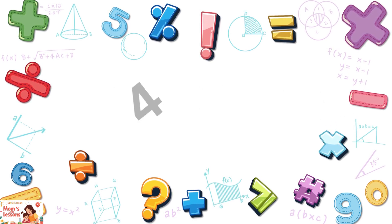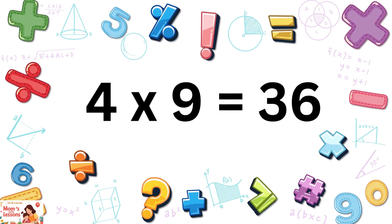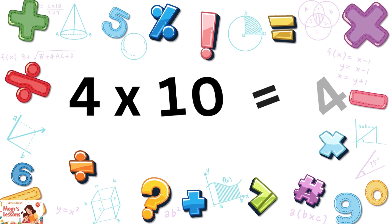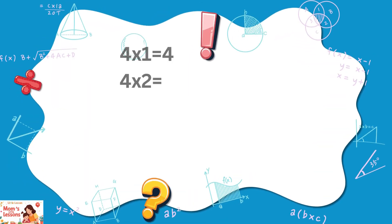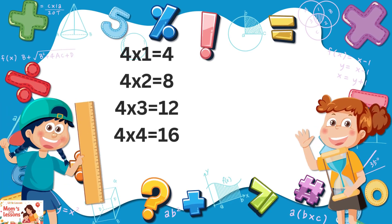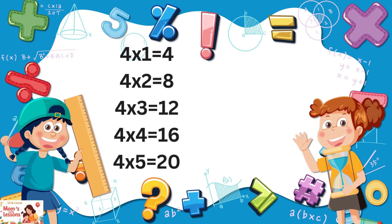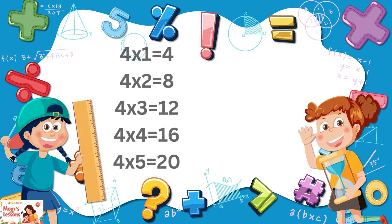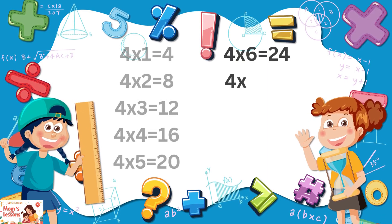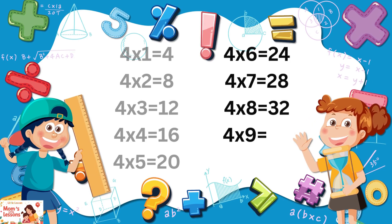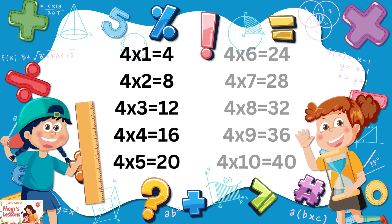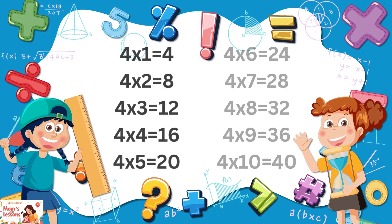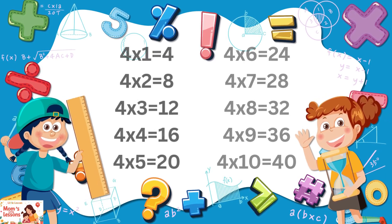Four nines are thirty-six, four tens are forty. Let's repeat, children. Four ones are four, four twos are eight, four threes are twelve, four fours are sixteen, four fives are twenty, four sixes are twenty-four, four sevens are twenty-eight, four eights are thirty-two, four nines are thirty-six, four tens are forty.